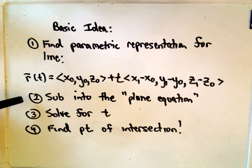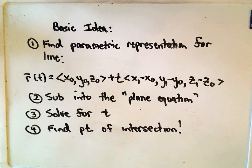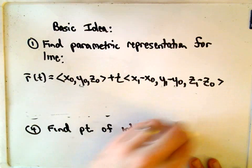We then just take each of those and substitute that into our plane equation. We'll solve for t and then we'll backtrack, and that will help us find our point of intersection. So what do I mean by all of this?